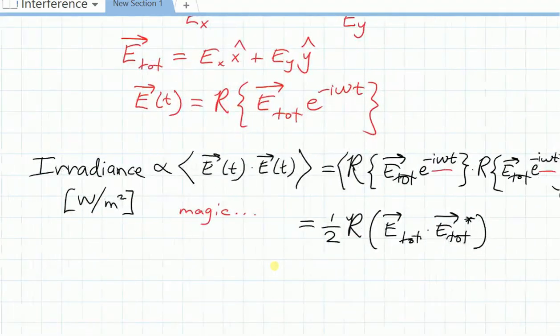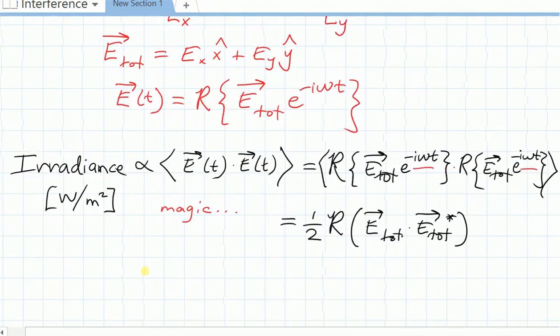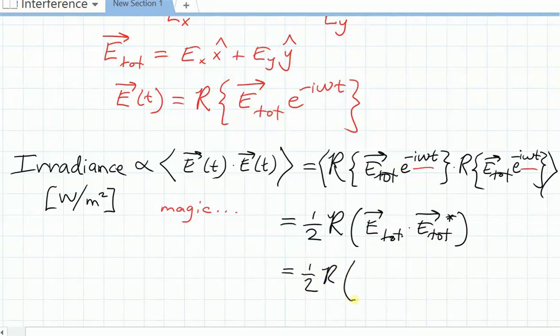It is just equal to one half of the real of e total dotted into e total complex conjugate. And let's be a little more explicit about that. It's equal to one half the real. We know that e tot is e x x hat plus e y y hat. So this is going to be equal to e x dotted into e x complex conjugate plus e y dotted into e y complex conjugate.